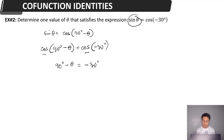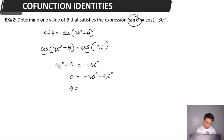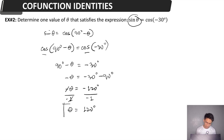Using the same algebraic process: negative θ = −30° − 90°. Combining like terms, negative θ = −120°. Dividing both sides by −1, theta = 120°. This is one value of our theta for Example 2.